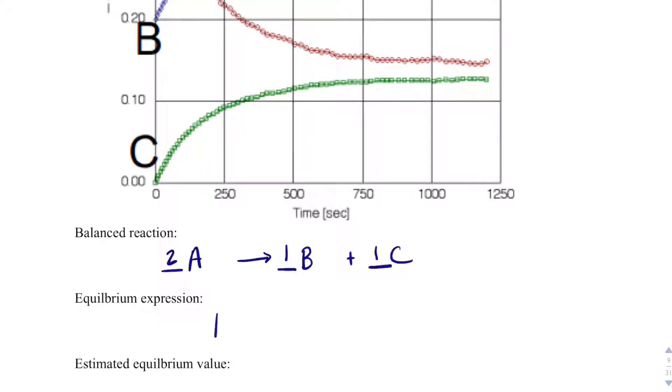My equilibrium expression, then, is going to be K equals the concentration of B, concentration of C, both to the first power, but we don't have to write those ones, divided by the concentration of A squared. Just products divided by reactants.